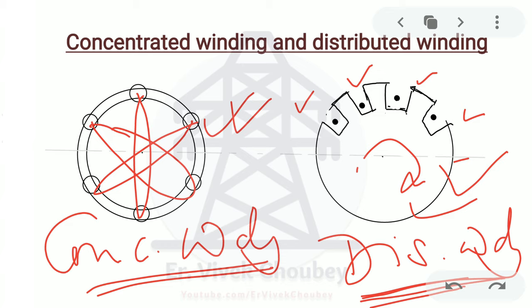In concentrated winding, some parts have greater flux than others, which increases leakage fluxes and hence eddy current losses. Distributed winding also gives better mechanical strength because the entire machine is slotted and windings are distributed over the entire machine rather than concentrated at certain points. And of course the harmonics we are going to discuss today are also mitigated because of distributed winding — distribution factor comes from the distributed winding.